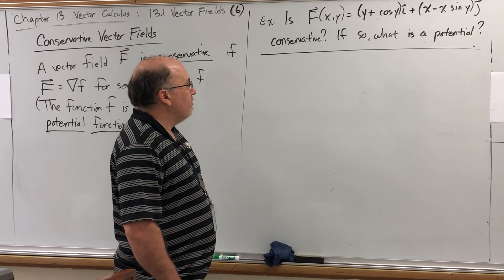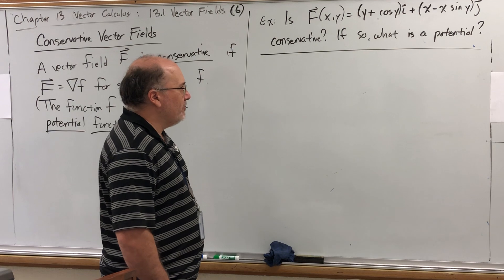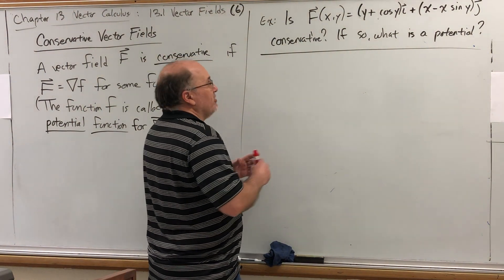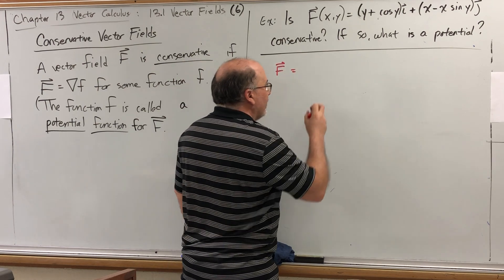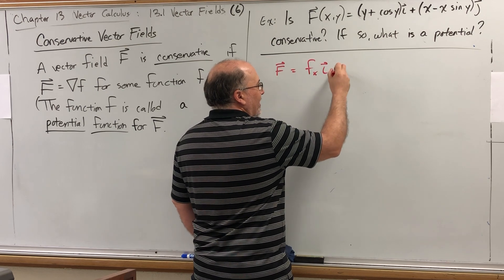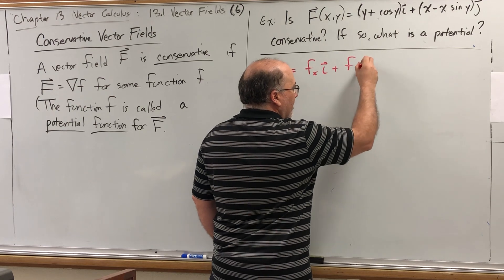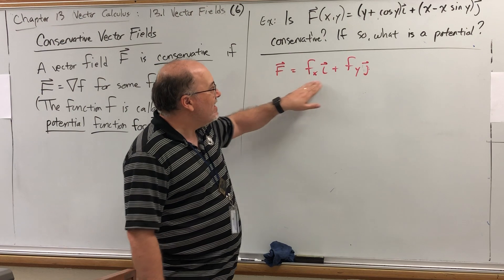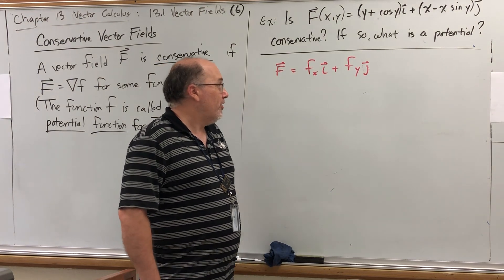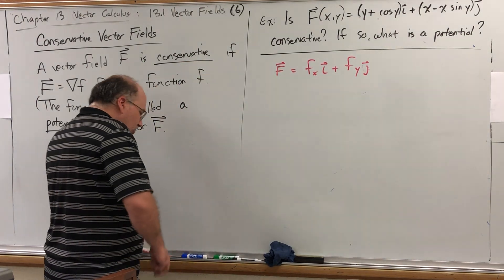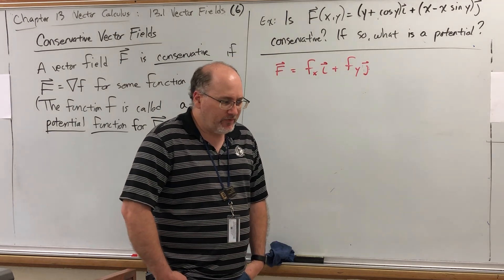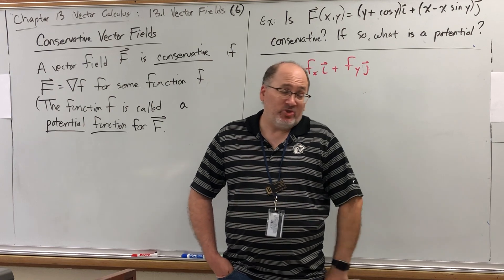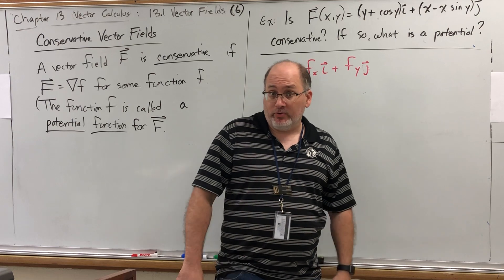So how can we determine if a vector field, at least in two dimensions, is conservative? What I'm about to show you is a sneak peek into 13.3, but I think we can handle it now. To be a conservative vector function means that you are of the form: partial derivative with respect to X times I, plus partial derivative with respect to Y times J. So if I already have a vector function, how can I see if its component functions are the partial derivatives of some other function — one with respect to X, one with respect to Y? The answer goes all the way back to when you first learned about mixed partial derivatives.